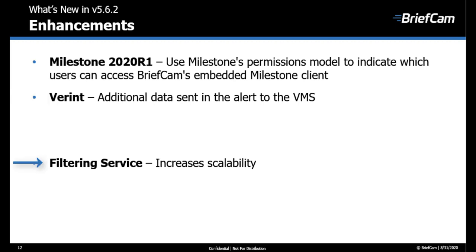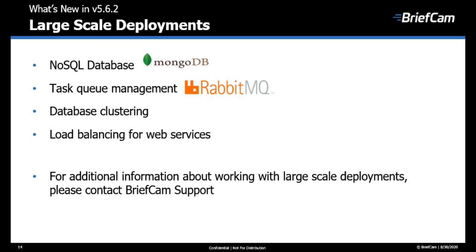An additional enhancement is that we've added a filtering service, which increases scalability, enhancing BriefCam's ability to support and handle large-scale deployments. As of version 5.6.2, BriefCam can optionally work with MongoDB — a document-oriented NoSQL database — which will improve performance and scalability in large-scale deployments. BriefCam can also now work with RabbitMQ, enhancing task queue management. These enhancements complement BriefCam's existing support for clustering multiple database instances and load balancers for high-scale systems. For additional information about working with large-scale deployments, please contact BriefCam support.